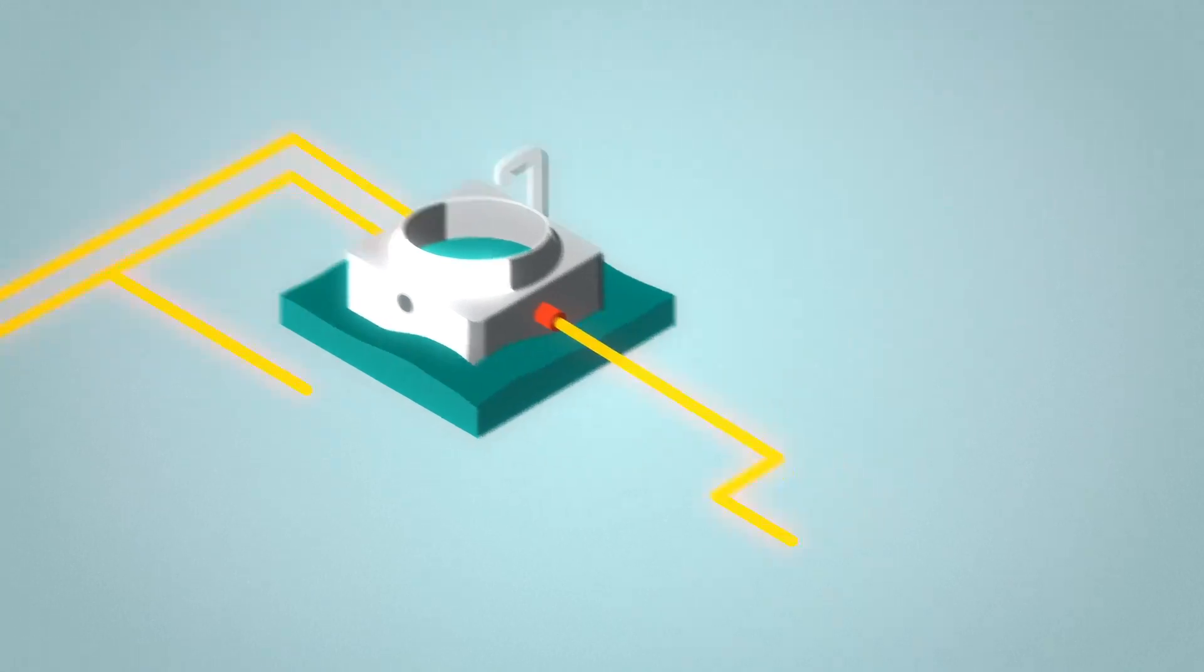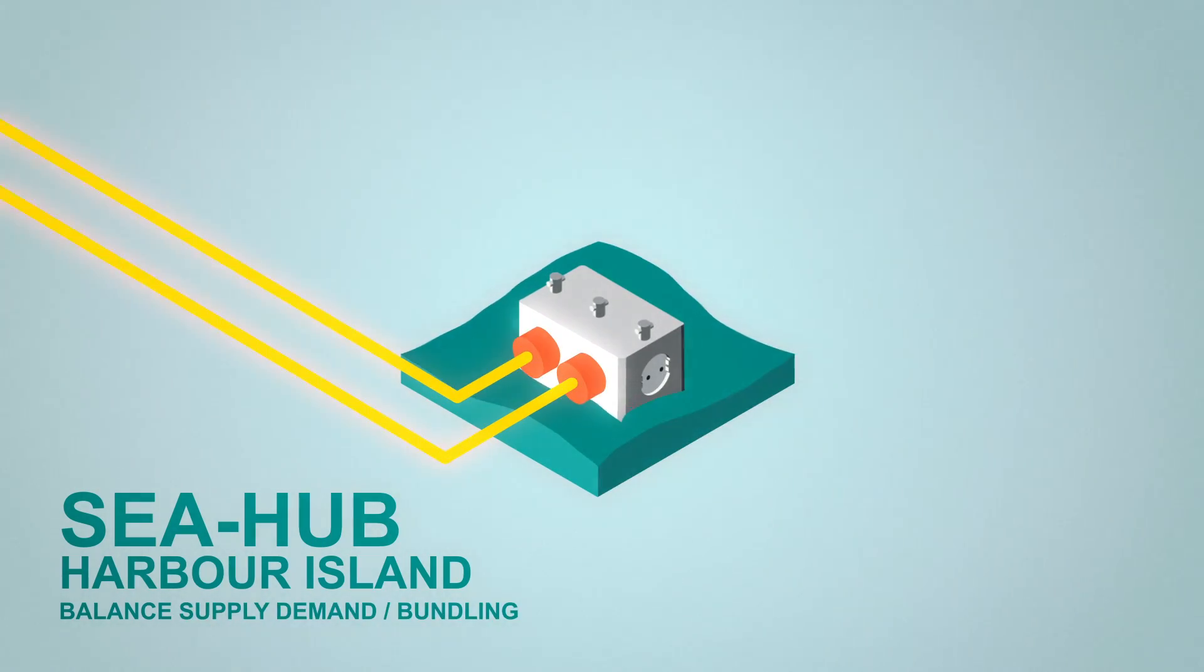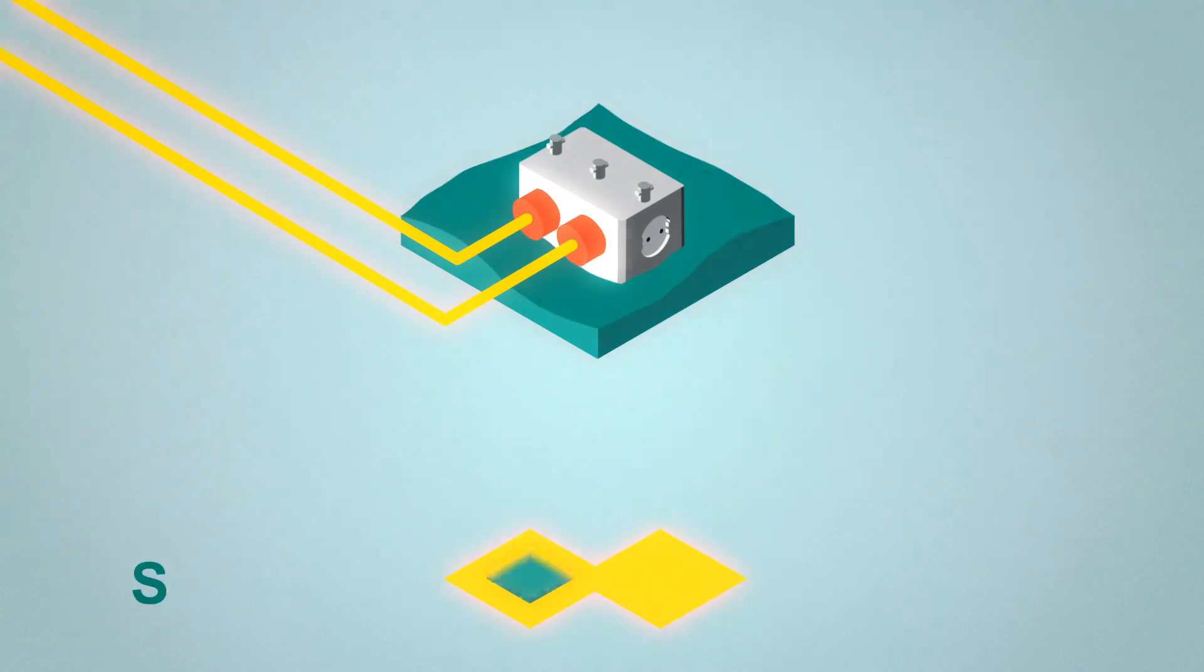But how do we get this energy ashore? Through the Sea Hub. This harbour island balances supply and demand and converts electricity in one single bundle, much more efficient.